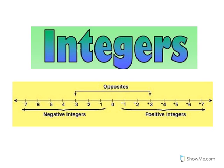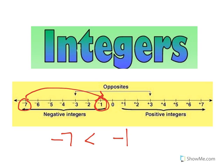We're going to end this video where we began. Integers are positive and negative whole numbers — no fractions, no decimals. And remember, the bigger the negative, the smaller it is. For example, negative seven is less than negative one. Y'all have a great day. Make sure you come in with questions. Thank you.